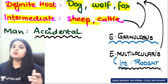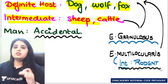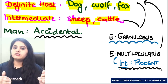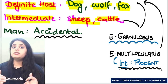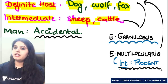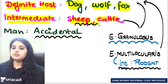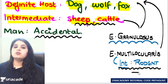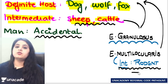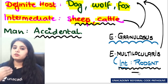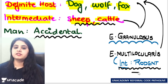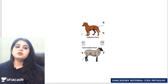So: definitive host of both can be dog, wolf, or fox. Intermediate host of granulosis is sheep and cattle; intermediate host of multilocularis is rodent. Either way, we are the accidental hosts.